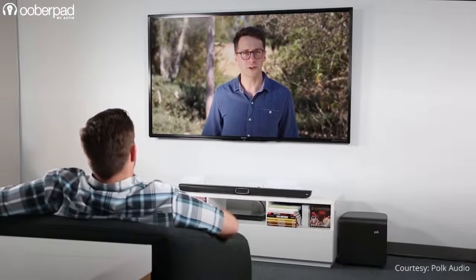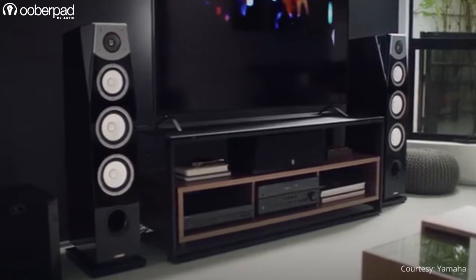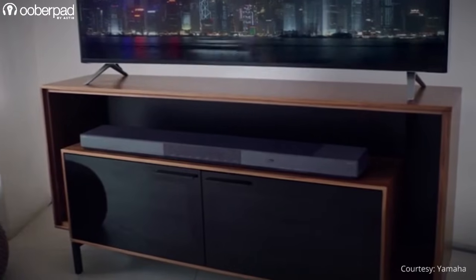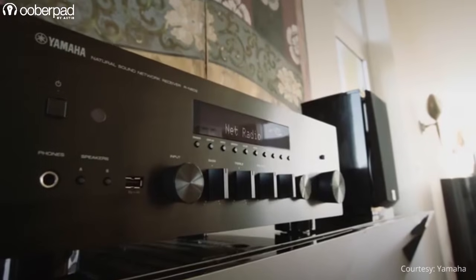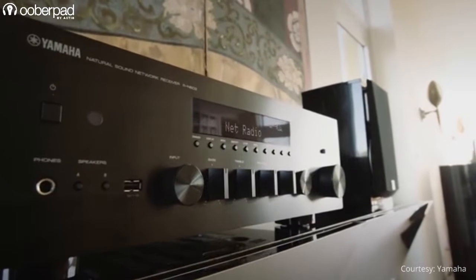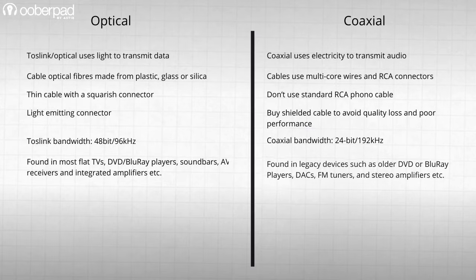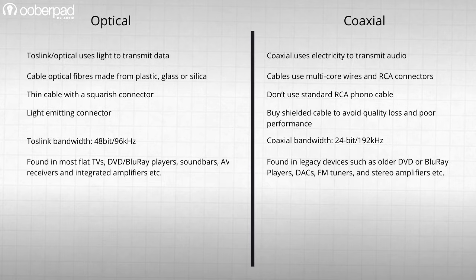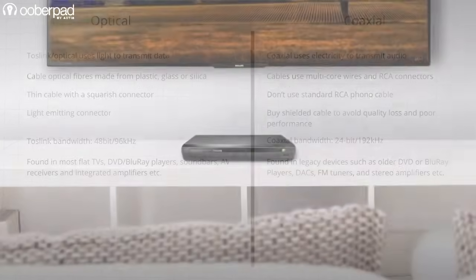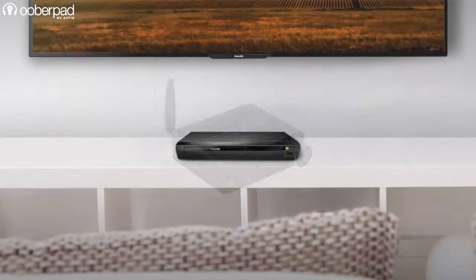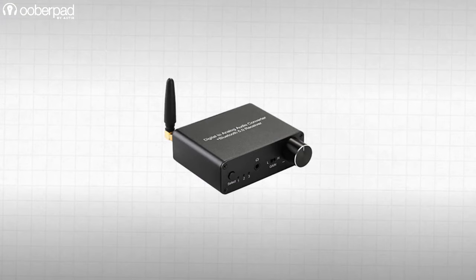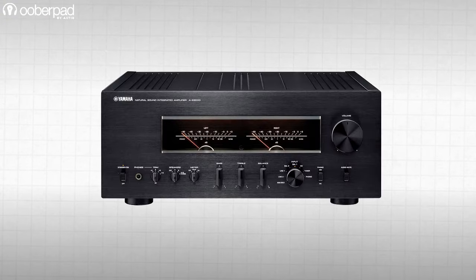Optical is usually found in most modern flat TVs, DVD and Blu-ray players, soundbars, AV receivers, and integrated amplifiers. Coaxial digital is usually found in legacy devices such as older DVD or Blu-ray players, DACs, FM tuners, and stereo amplifiers, and its popularity is steadily declining.